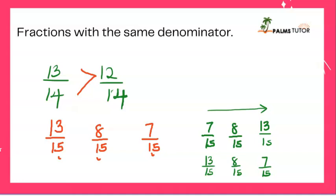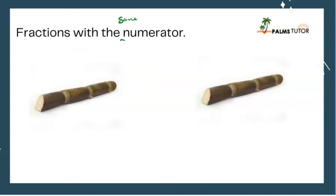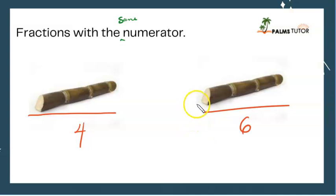Now let's look at fractions with the same numerator. Imagine two equal sugar canes — the same size. If I break one into four pieces and share among six people, which group gets bigger portions? The group of four, because dividing into four gives bigger pieces than dividing into six. So with the same numerator, the fraction with the smaller denominator is bigger, because the parts are larger.